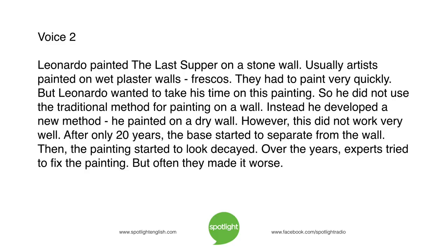Leonardo painted The Last Supper on a stone wall. Usually artists painted on wet plaster walls — frescoes — and had to paint very quickly. But Leonardo wanted to take his time, so he did not use the traditional method. Instead, he developed a new method and painted on a dry wall. However, this did not work very well. After only twenty years, the base started to separate from the wall, and the painting started to look decayed. Over the years, experts tried to fix the painting, but often they made it worse.